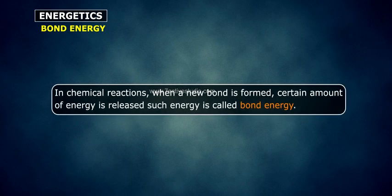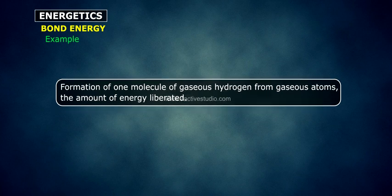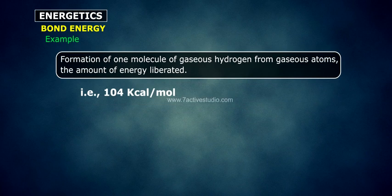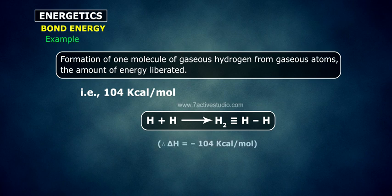Bond energy: In chemical reactions, when a new bond is formed, a certain amount of energy is released. Such energy is called bond energy. Example — formation of one molecule of gaseous hydrogen from gaseous atoms. The amount of energy liberated is 104 kcal per mole. That is, H + H → H₂, therefore ΔH = −104 kcal/mol.